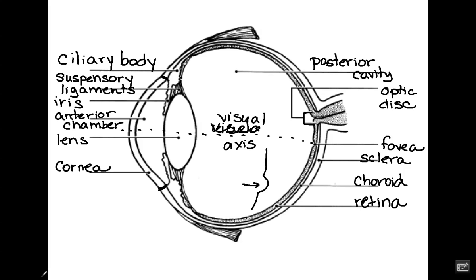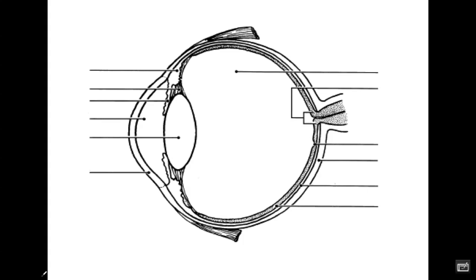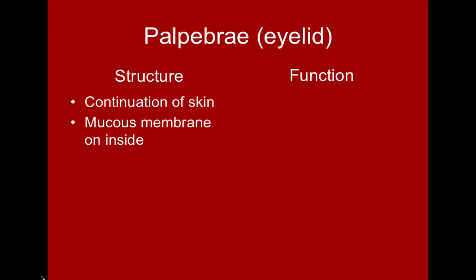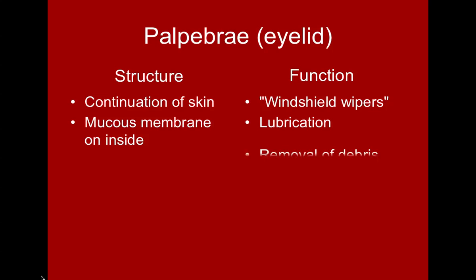So those are the basics in terms of the structure of the eye. Now let's look at the function. We'll start with the accessory structures — structures that are not actually part of the eye but help the eye function correctly. The first is the palpebrae, or the eyelid, which is basically a continuation of the skin with a mucous membrane on the inside. The eyelids function as windshield wipers with lubrication and removal of debris.